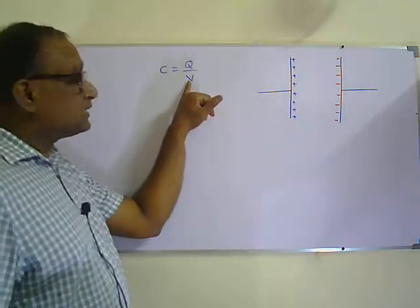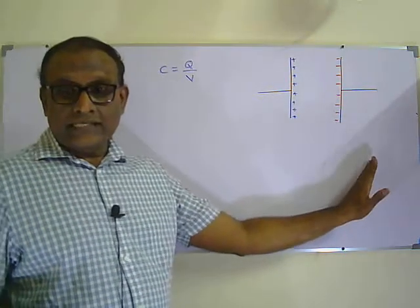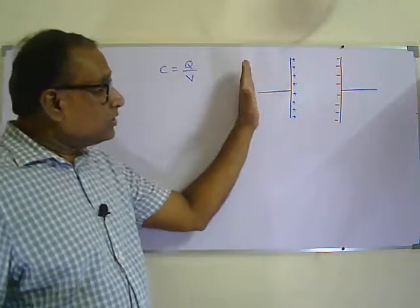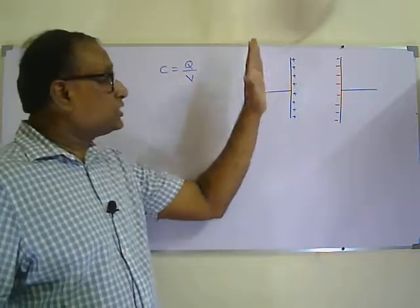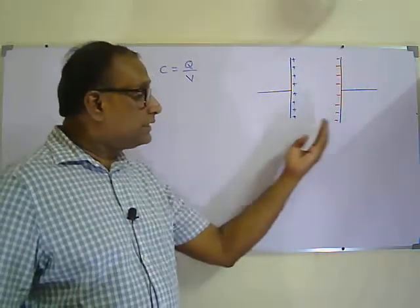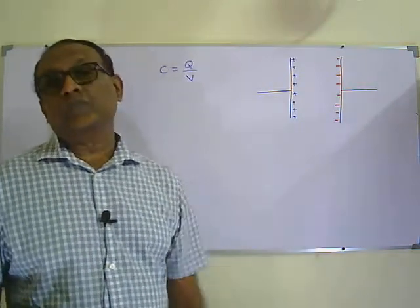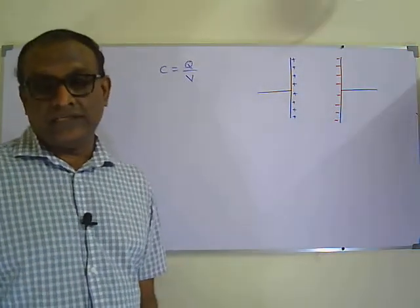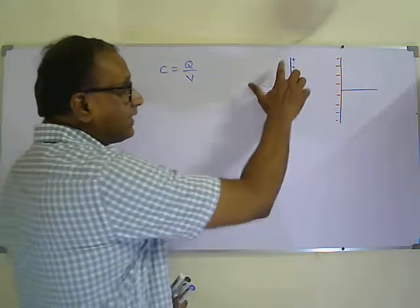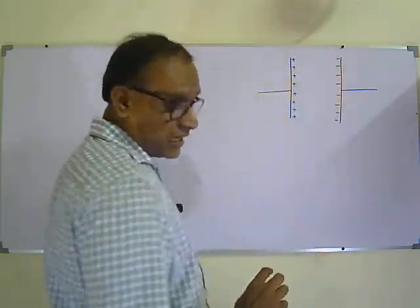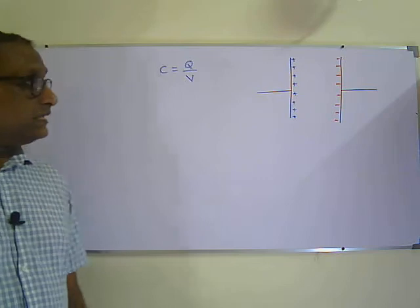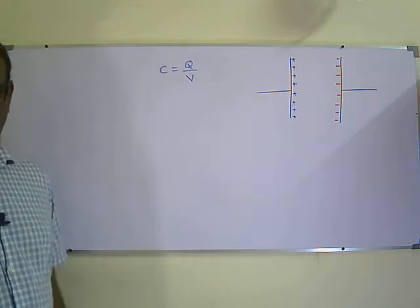This potential difference between the parallel plates is due to the amount of charge stored in the capacitor. The amount of charge stored decides the potential difference across the plates. That means each and every positive charge is contributing to the potential difference across the plates.